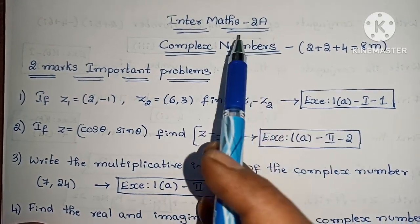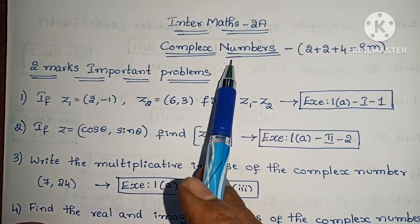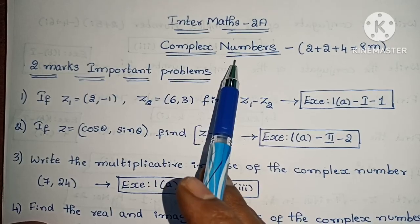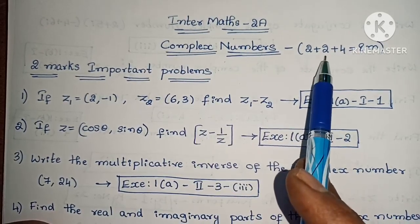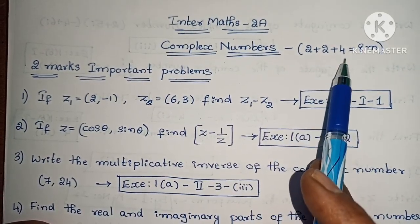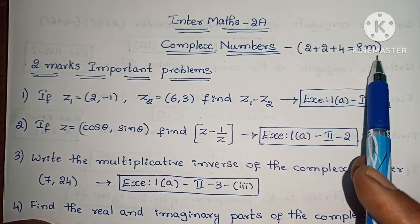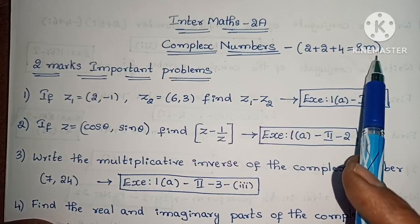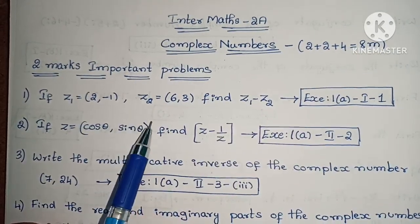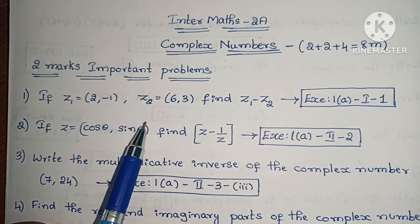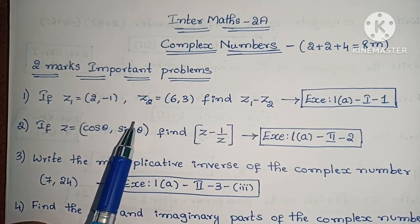First, in our maths study, there are complex numbers. This chapter has 2 marks and 4 marks questions, so this chapter is 8 marks. Here, I will tell you about questions and I will explain the solutions.